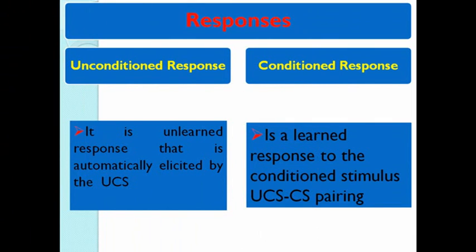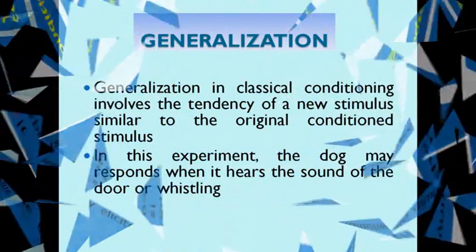There are also two types of responses. The first is unconditioned response — it is an unlearned response that is automatically elicited by the unconditioned stimulus. The second type is conditioned response — it is a learned response to the conditioned stimulus, meaning it appears after pairing the unconditioned stimulus and conditioned stimulus.